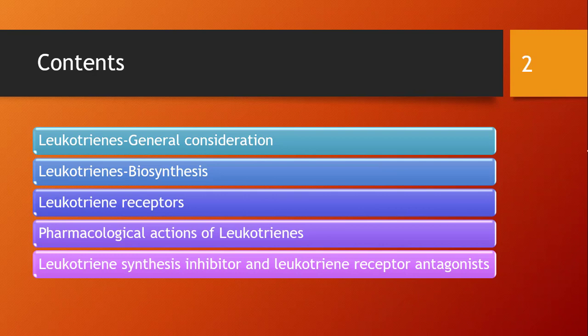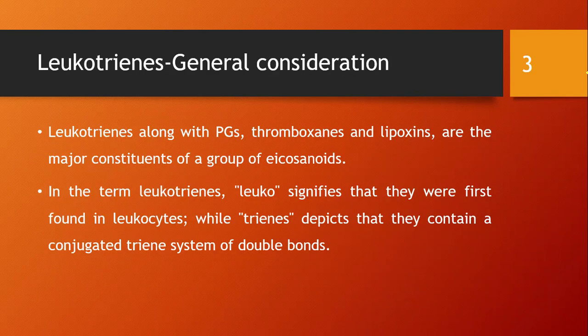The contents we will cover are: general consideration of leukotrienes, biosynthesis of leukotrienes, receptors of leukotrienes, pharmacological actions of leukotrienes, and lastly, leukotriene synthesis inhibitors and leukotriene receptor antagonists — the drugs that act on leukotriene synthesis and receptors.